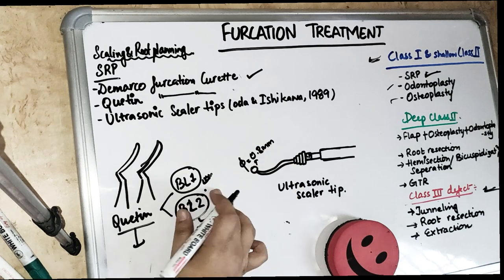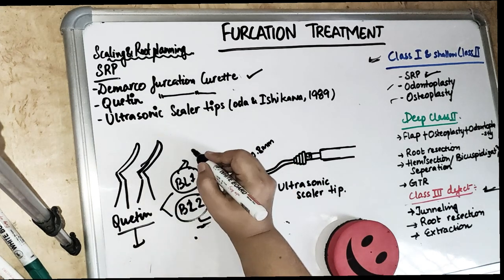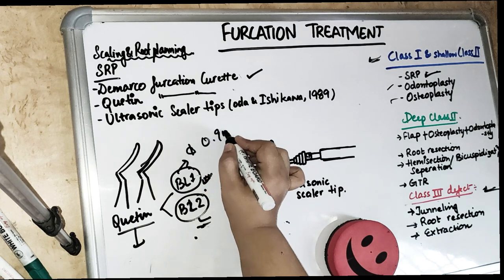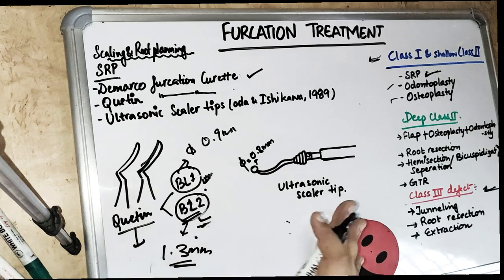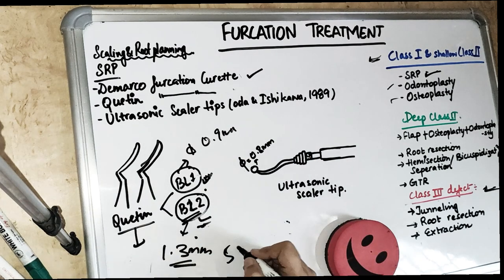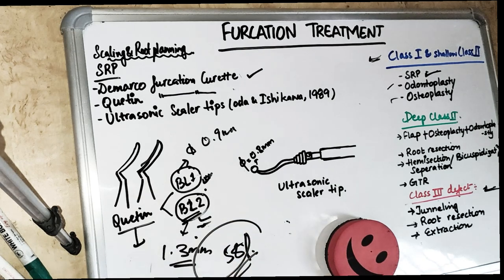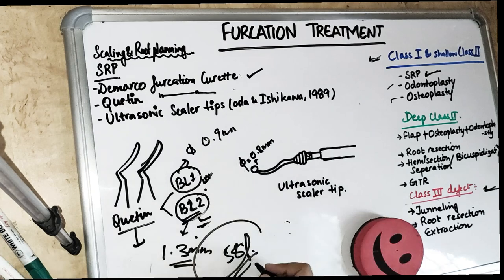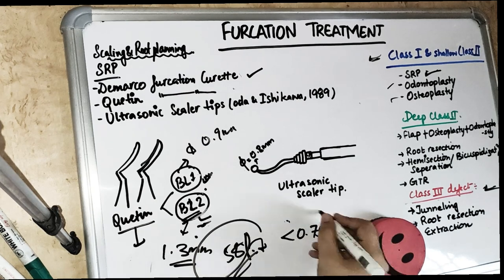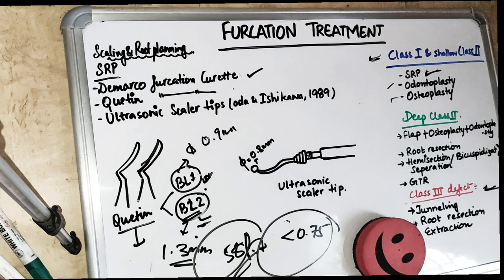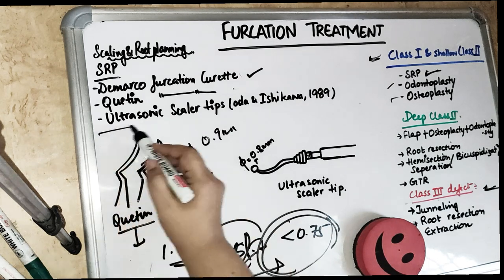The smaller one is BL1 and MD1 with a blade width of 0.9 millimeters, and BL2 has a blade width of 1.3 millimeters. However, 58% of upper and lower molars have a furcation entrance diameter less than 0.75 millimeters, so these furcation curettes won't fit in the narrower entrances. This is where ultrasonic scaler tips come in.